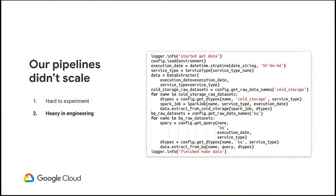The second problem we had was a lot of boilerplate code being written — purely due to the fact that the orchestration layer, the platform itself, didn't provide this abstraction to the end user. We knew we needed to solve this to allow the data scientists to focus more on the modeling and what their specialty is.